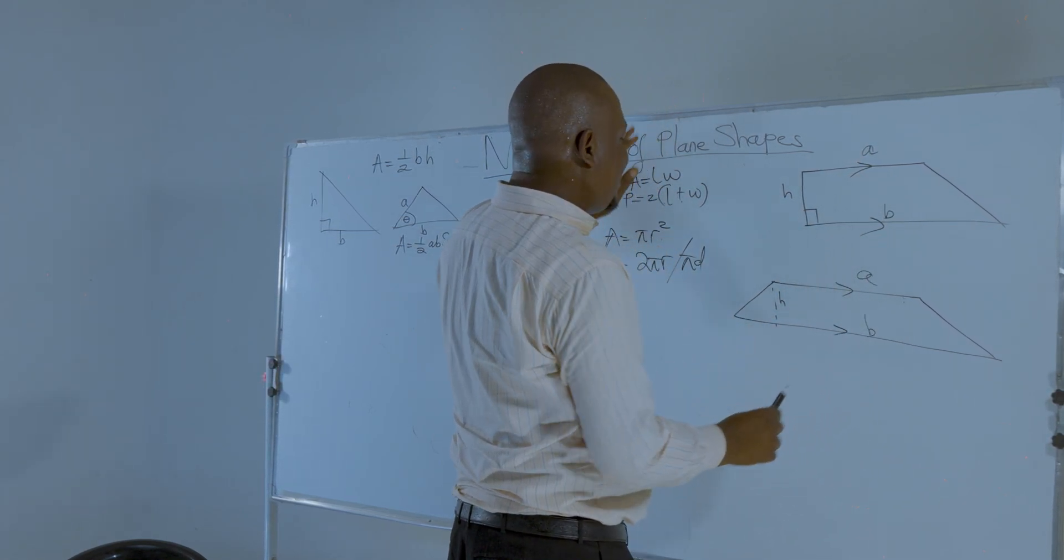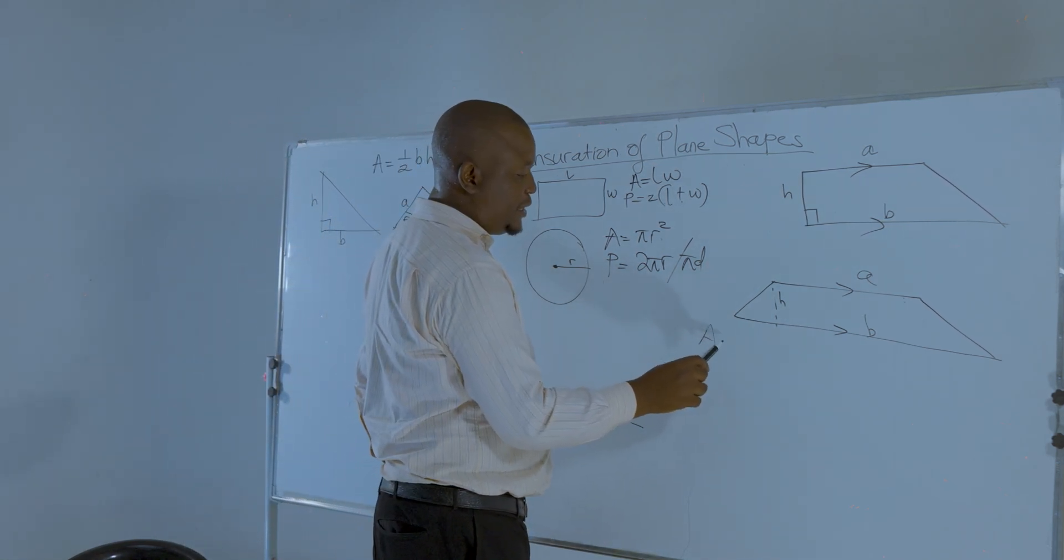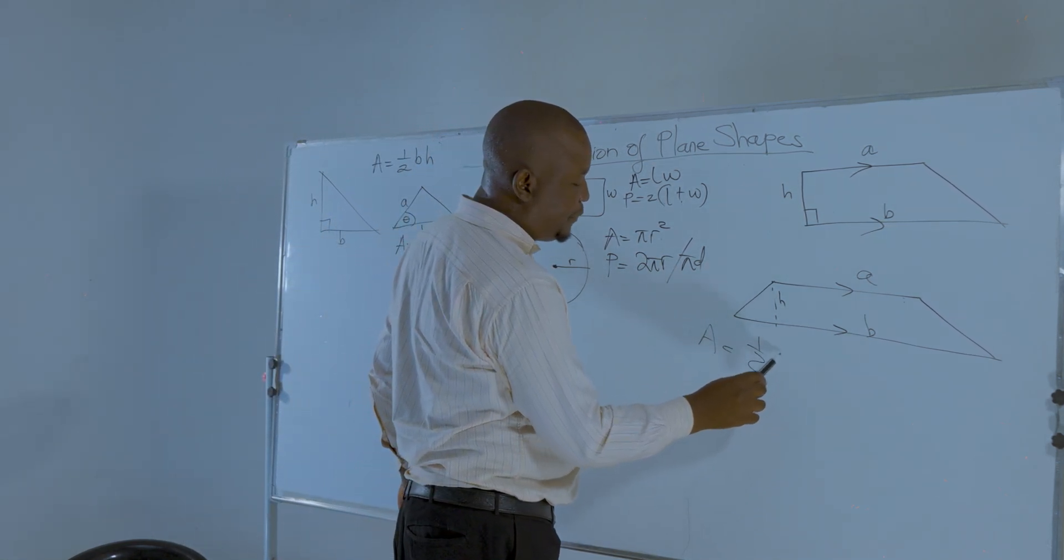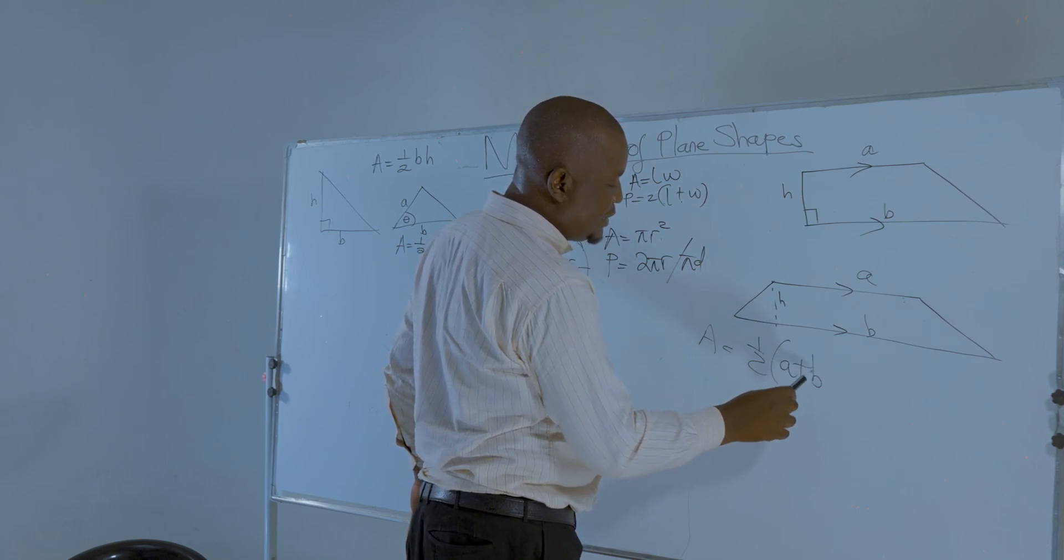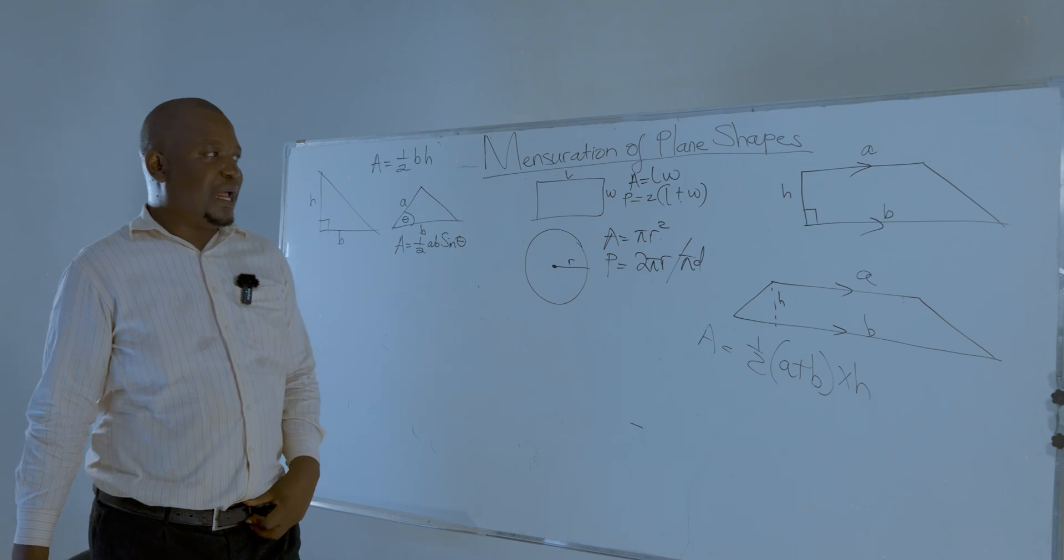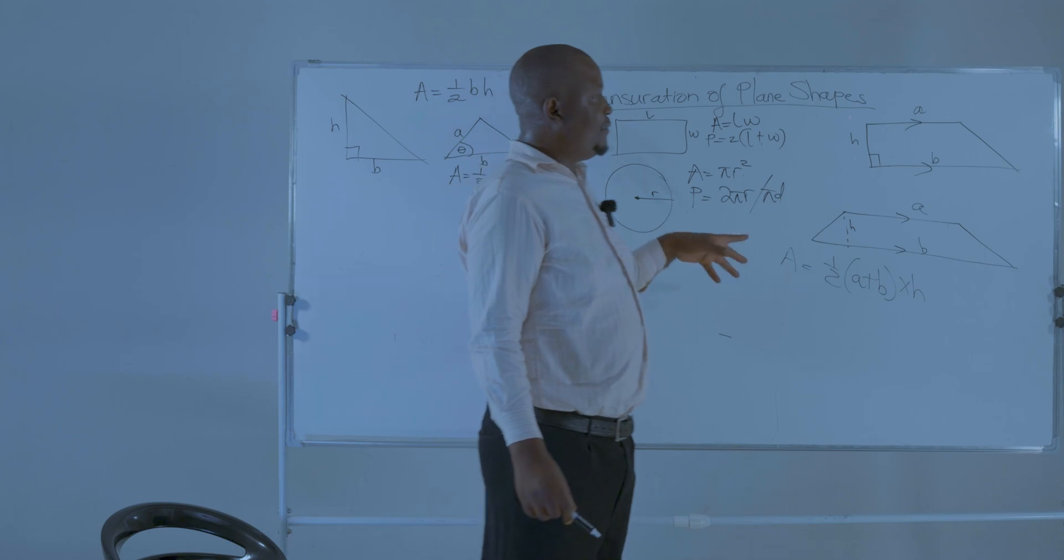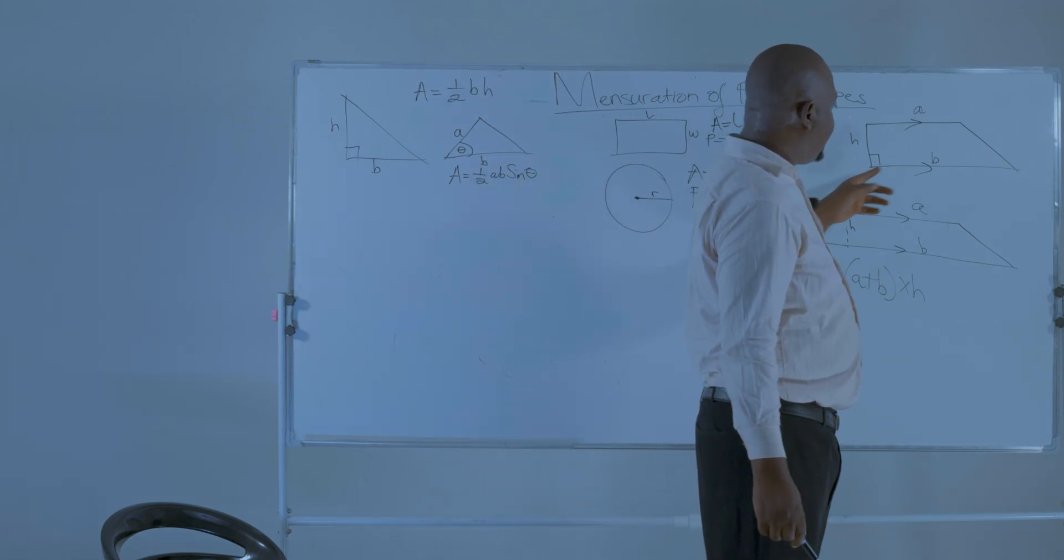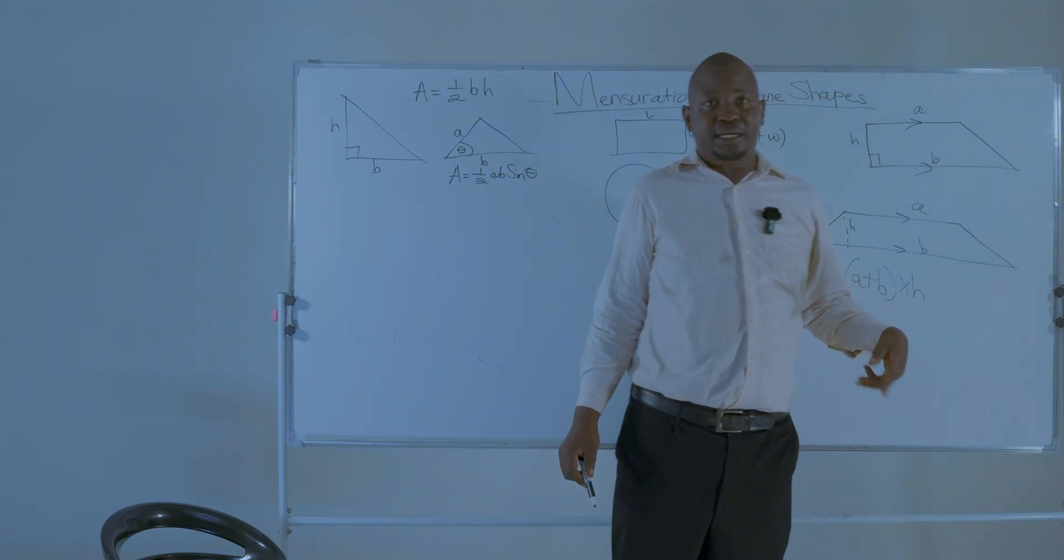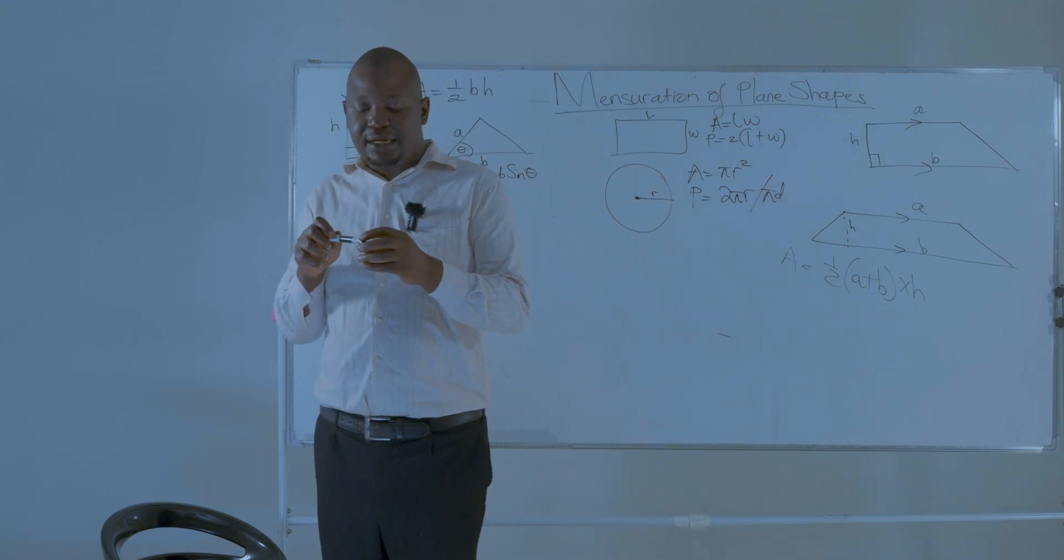Which subsequently means that if we are calculating the area of a trapezium, the area of a trapezium is given by half the sum of parallel lines multiplied by the height: half A plus B multiplied by the height. That's the area of a trapezium. Or the perimeter of a trapezium can be calculated by the distance right around that object. You just add the distances right around that object.